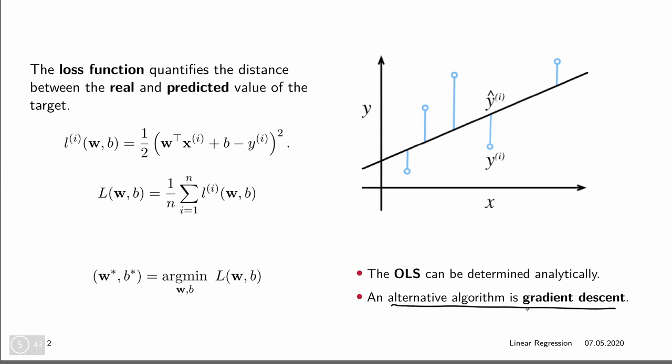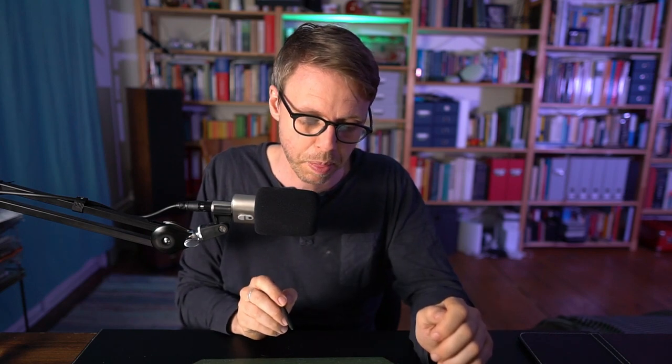Today we're going to do the same thing using the gradient descent algorithm, which has the advantage of being a much more general algorithm than the ordinary least squares estimator, which is only for this particular problem. Gradient descent solves this loss function — a loss that takes a value w for the weights and the bias term — and we want to minimize this loss and return the argmin, so the values that achieve this minimum.